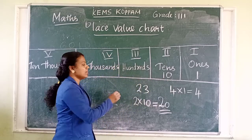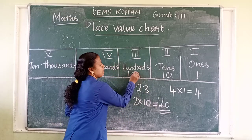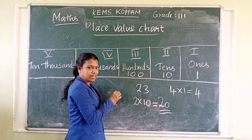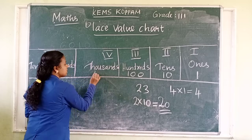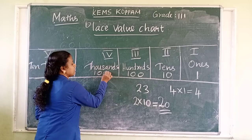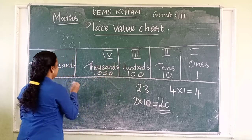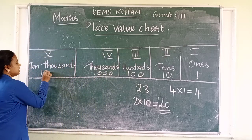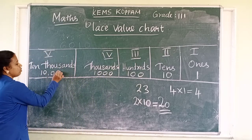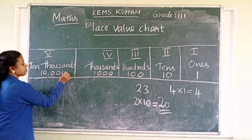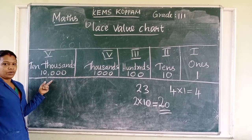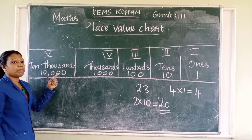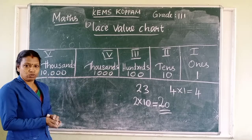Like that, the third place — hundreds — the place value is hundred. Then thousands, then ten thousands. These are the place values.